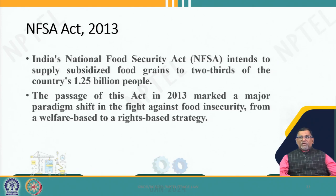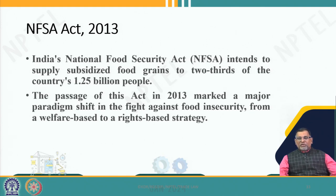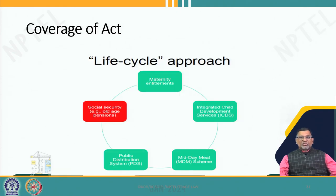Quickly, let us go through what the Indian National Food Security Act of 2013 — NFSA — talks about. Some of the data shows that out of 1.4 billion, 1.25 billion are benefited by India's public distribution system. India cannot leave this public distribution system for at least the next one or two decades because the largest number of people are benefited from it. Let us look at the coverage of the act.